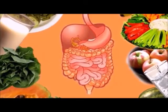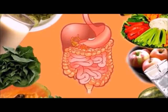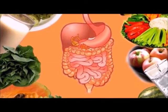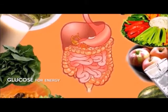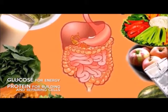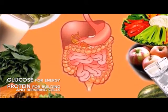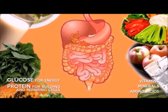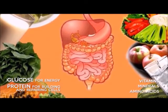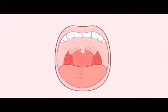The purpose of the digestive system is to break down food into components the body can use, like glucose for energy, protein for building and repairing cells, and extracting vitamins, minerals, and amino acids for cell function.